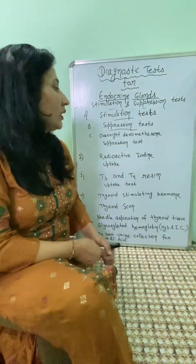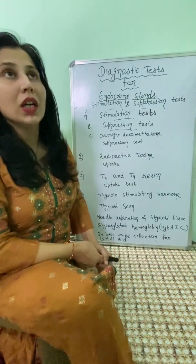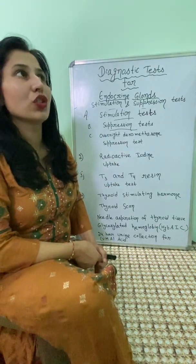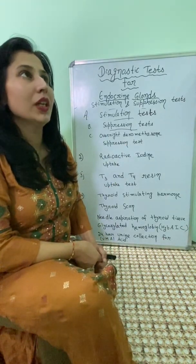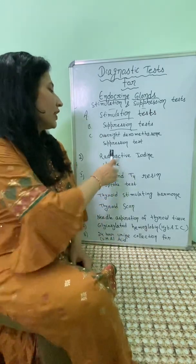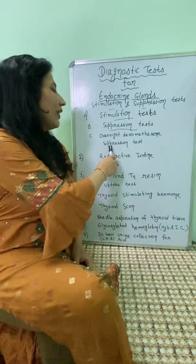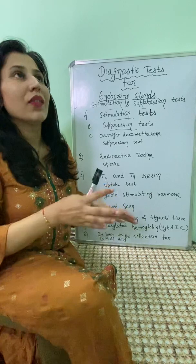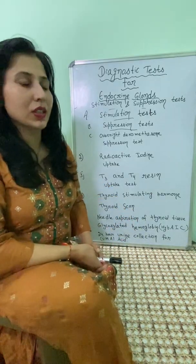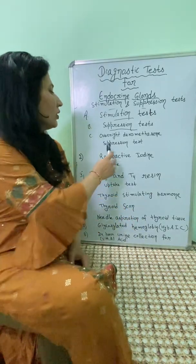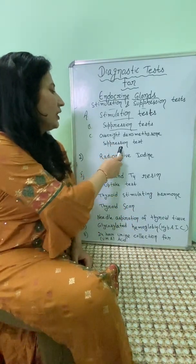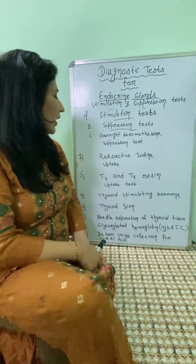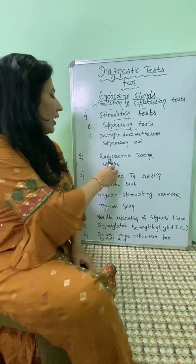Next is the overnight dexamethasone suppression test. Dexamethasone is a corticosteroid given at night. By morning, the cortisol level should be suppressed. If there is no suppression of cortisol, it means there is an increased cortisol level, indicating Cushing's disease. This test helps distinguish Cushing's disease.